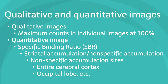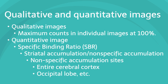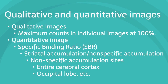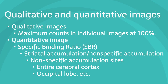In addition to the qualitative image, which displays the highest count of each SPECT image as 100%, the quantitative image is also useful in reading DAT scans. It shows the degree of specific binding to the striatum as a numerical value — specifically, the specific binding ratio, quantified as the ratio of specific binding to the striatum divided by non-specific accumulation in other brain regions such as the cerebral cortex.